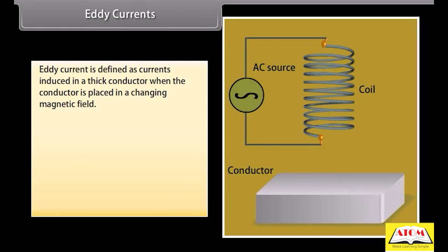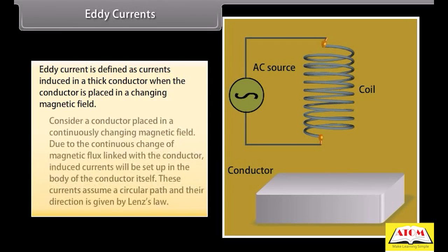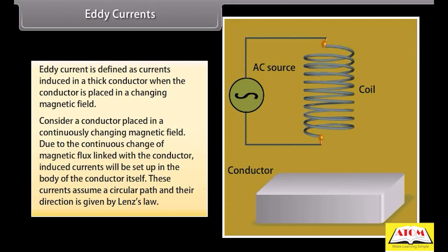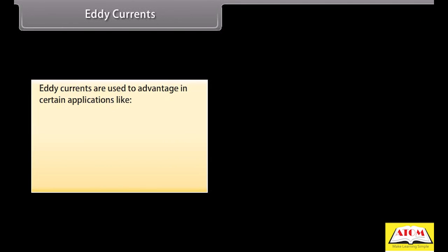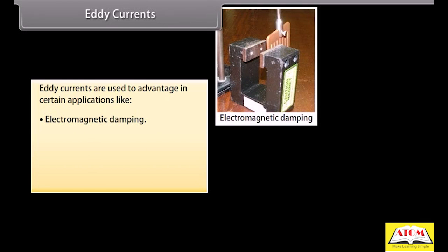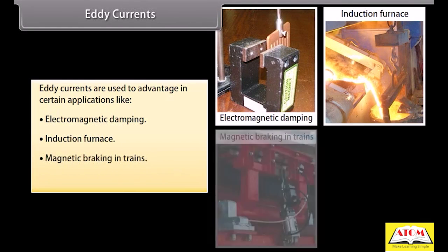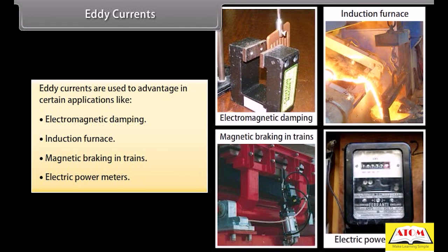Eddy currents are defined as currents induced in a thick conductor when the conductor is placed in a changing magnetic field. Due to the continuous change of magnetic flux linked with the conductor, induced currents are set up in the body of the conductor itself. These currents assume a circular path and their direction is given by Lenz's law. Eddy currents are used to advantage in applications like electromagnetic damping, induction furnace, magnetic braking in trains, and electric power meters.